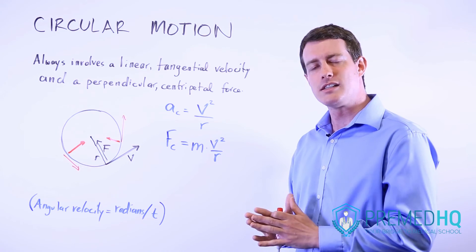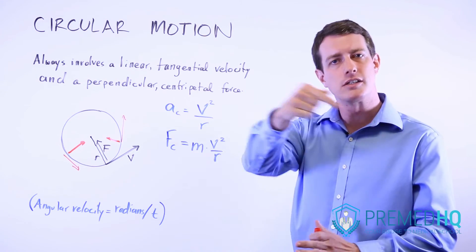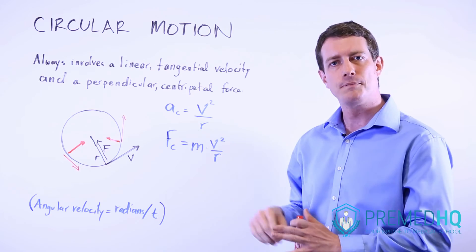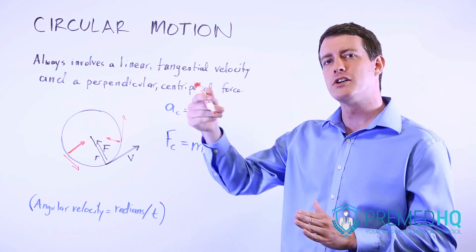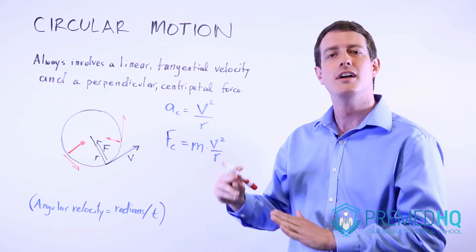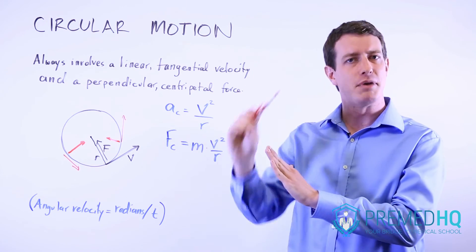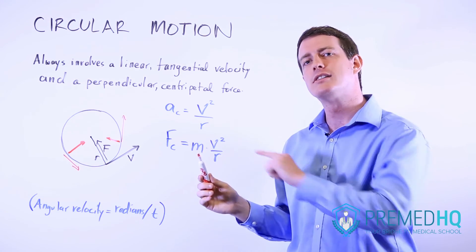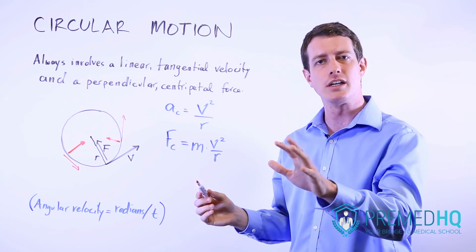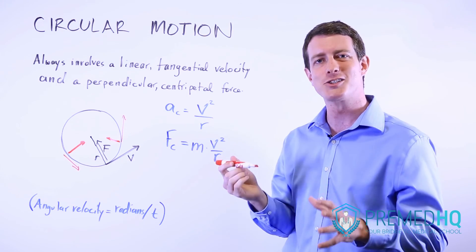A third time you might see it is if you have a bicycle rider on a banked slope traveling around in a circle. Even though there is a gravitational force pulling the bicyclist down the slope and a normal force of the track pushing on the bicyclist, realize that if an object is moving in circular motion, the centripetal force must be pointing toward the center of that circle.